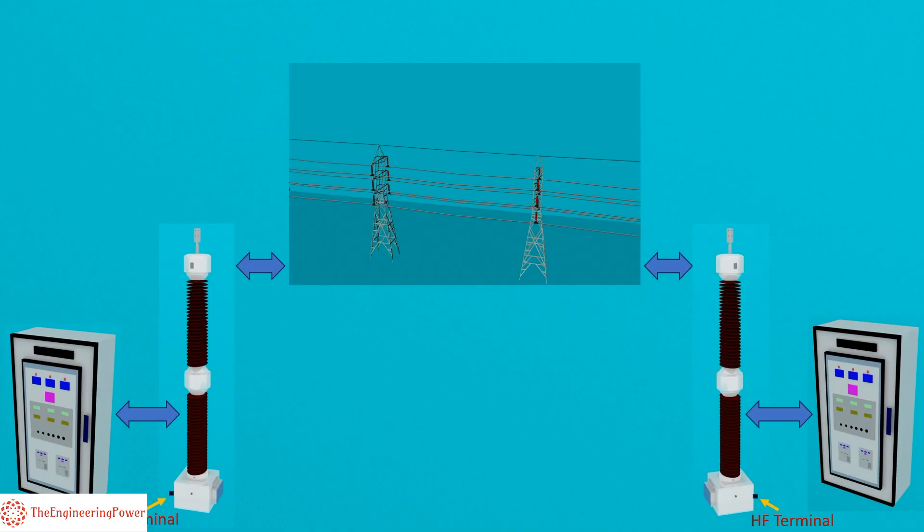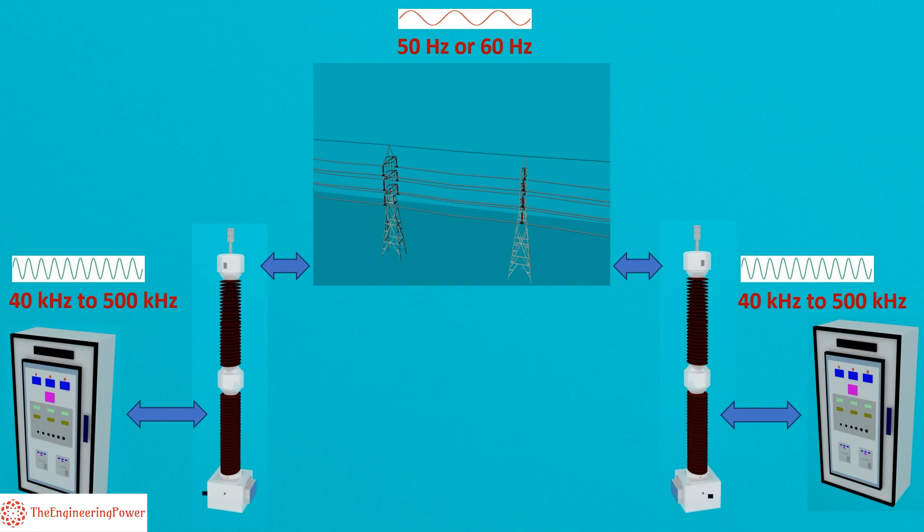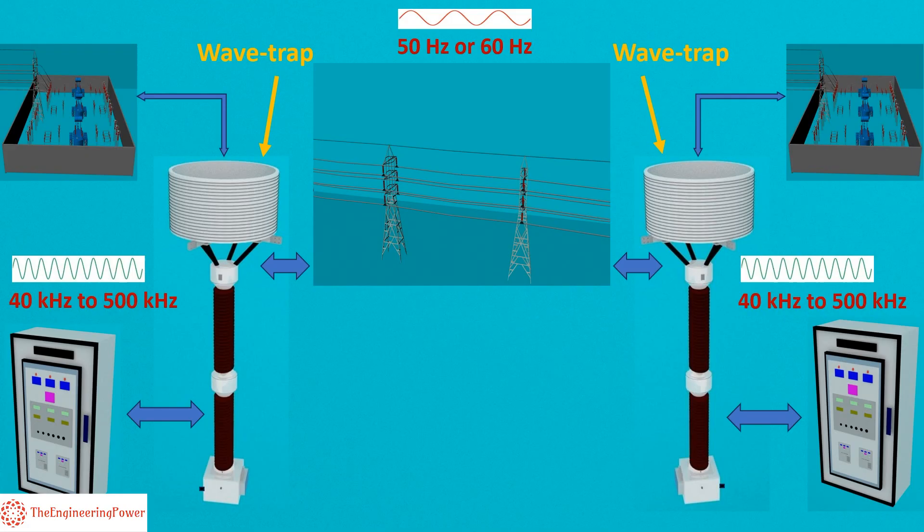However, PLCC uses very high frequencies in the range of 40 kilohertz to 500 kilohertz for transmission of different signals including speech, telemetry, and protection tripping commands, whereas the frequency of power lines is normally 50 or 60 hertz. These high frequency signals must not enter into substation switchyard to avoid any interference with high power equipment. For this purpose, a line trap or wave trap is installed near the connection point of CCVT.